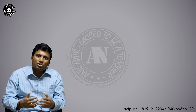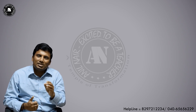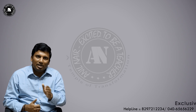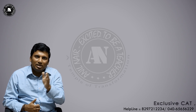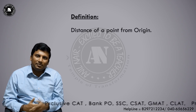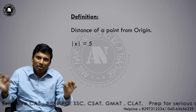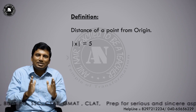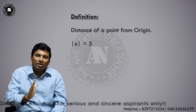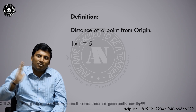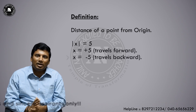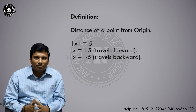Before solving the question, let us understand the definition: a modulus function is the distance of a given point from the origin. For example, mod x = 5 means x is at 0, it travels 5 units either forward or backward, so x will be equal to +5 or -5.